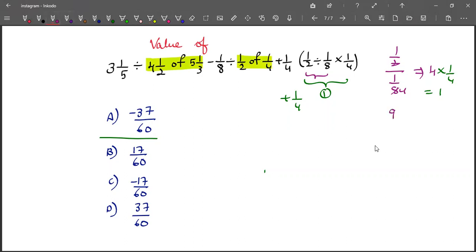So 4 1 by 2 is nothing but 9 by 2, and 5 1 by 3 means 16 by 3. This is 2.